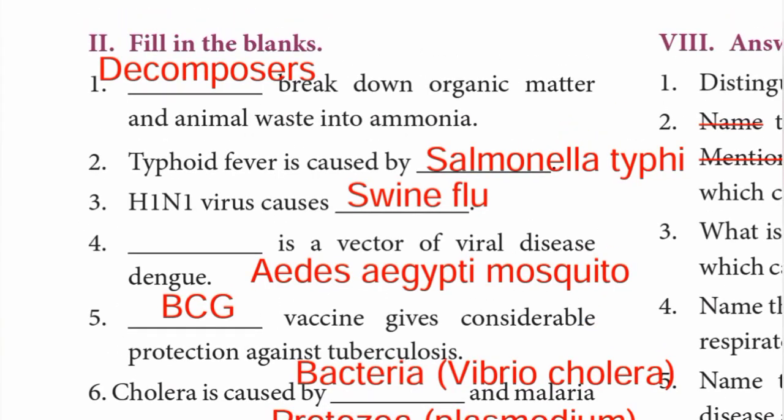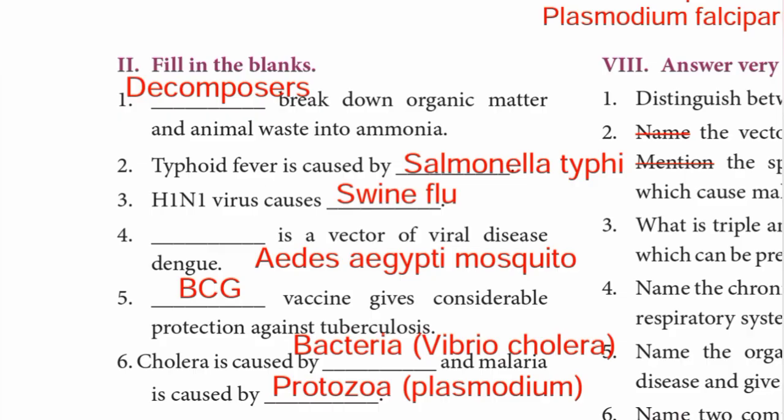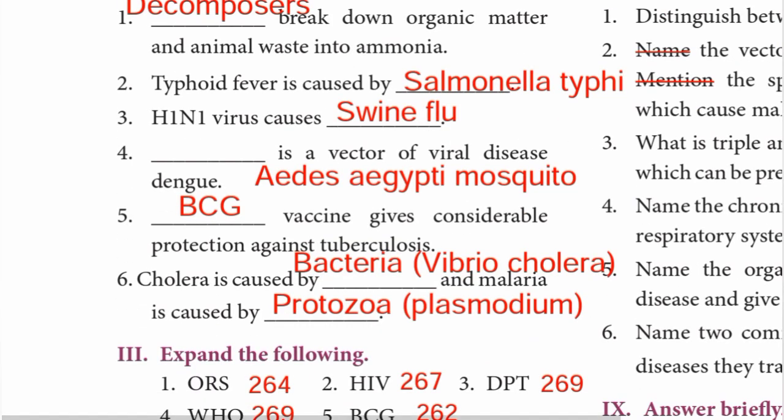First one — blank breaks down organic matter and animal waste into ammonia. The answer is decomposers. Second one — typhoid fever is caused by Salmonella typhi.